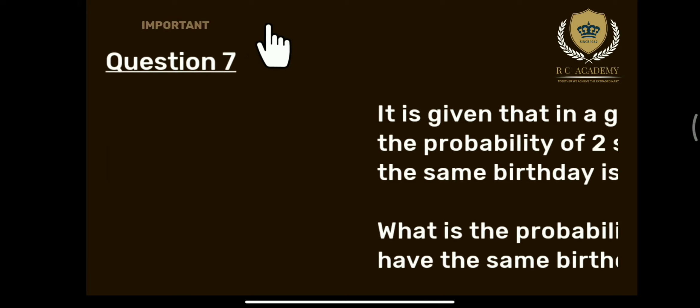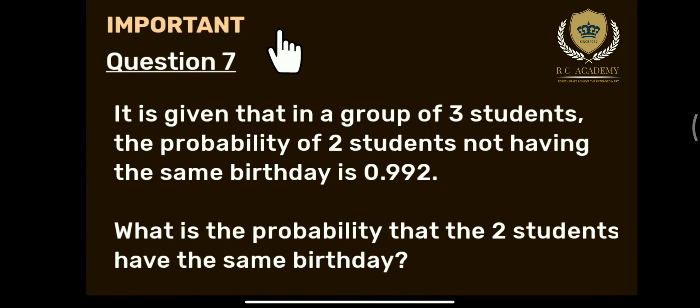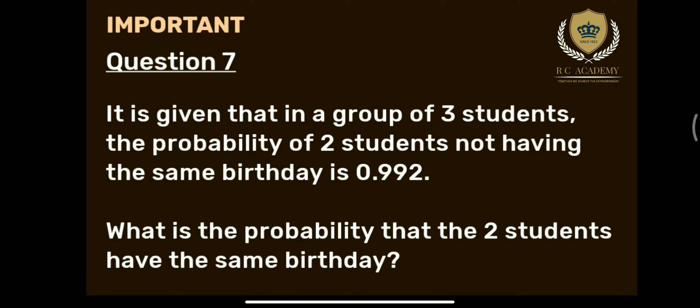Question number 7: It is given that in a group of three students, the probability of two students not having the same birthday is 0.992. What is the probability that the two students have the same birthday? देखिए, इस question में क्या कह रहा है — three students का group है, उनमें से two students की same birthday न होने की probability 0.992 है। तो बताना है कि two students की same birthday होने की probability क्या होगी।